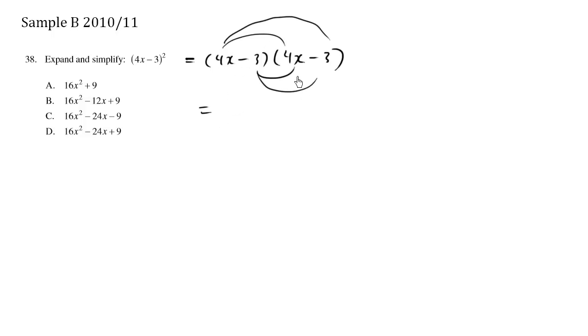So the first part, 4x times 4x is going to be 4 times 4 is 16 x squared.